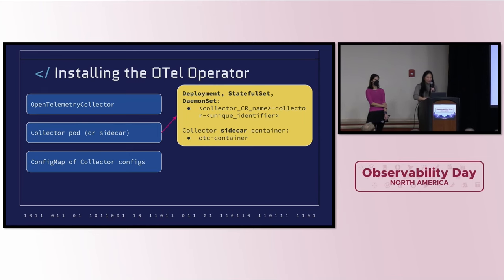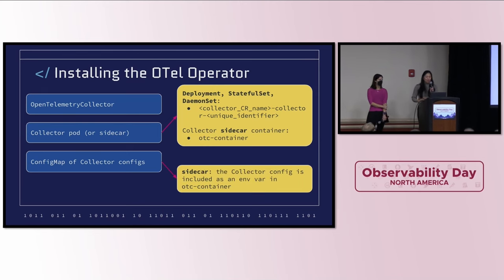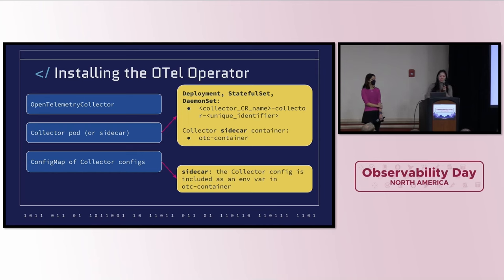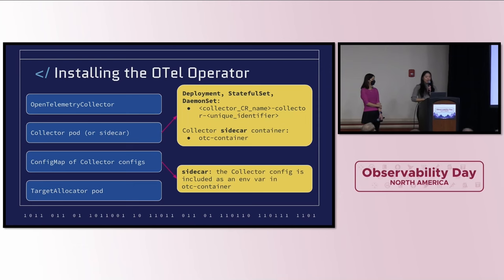Also look for a config map of your collector configs. For non-sidecar modes, the collector config is included as an environment variable, whereas for sidecar modes it's going to be included with the following name format. And finally, if you have enabled the target allocator, also look for a resource for that.